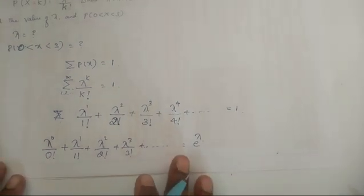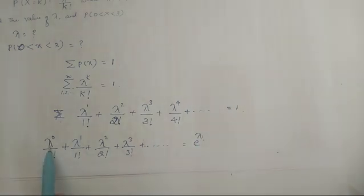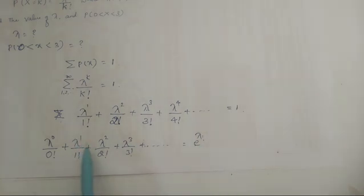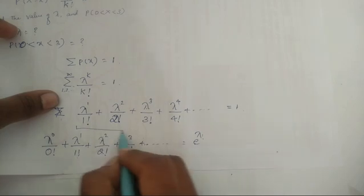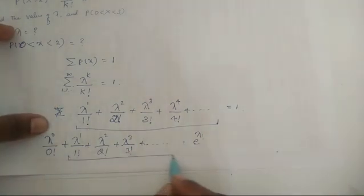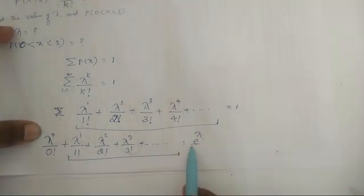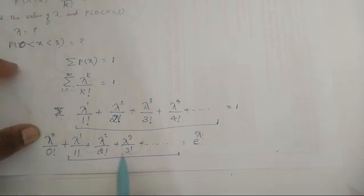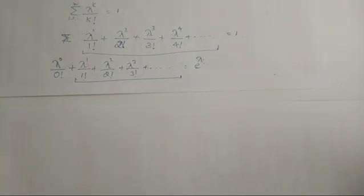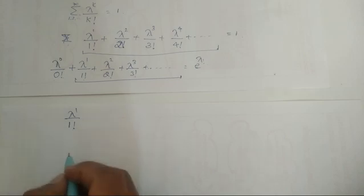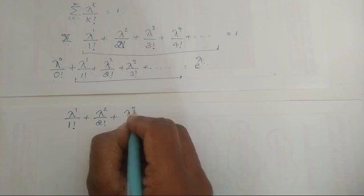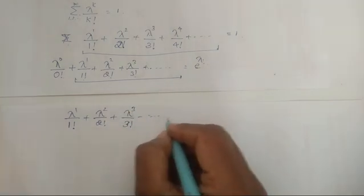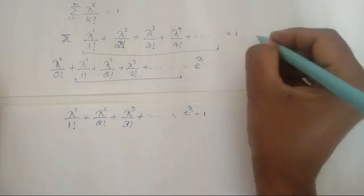The power series formula for e^x is: e^x = x^0/0! + x^1/1! and so on. Applying this here, our summation (which starts from k=1) equals e^λ minus the k=0 term. Since λ^0/0! = 1/1 = 1, the summation equals e^λ − 1. So e^λ − 1 = 1. Let us call this equation 2.